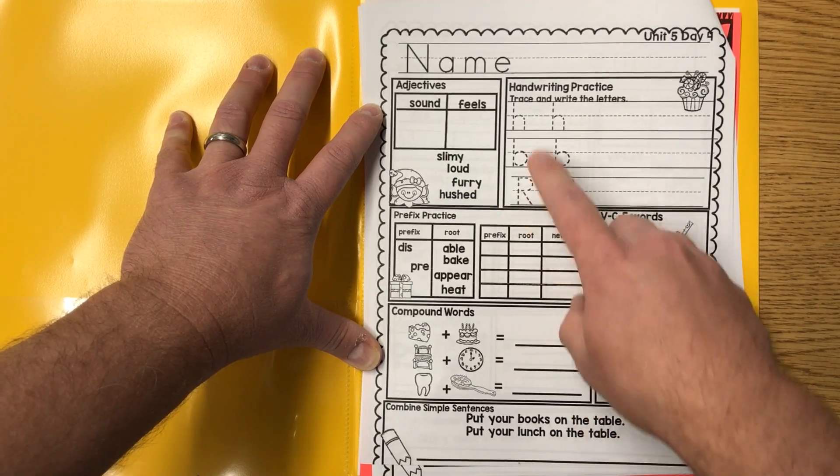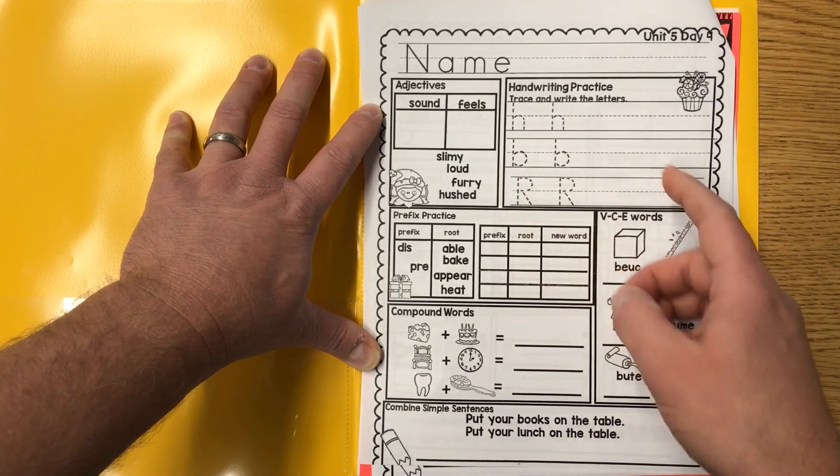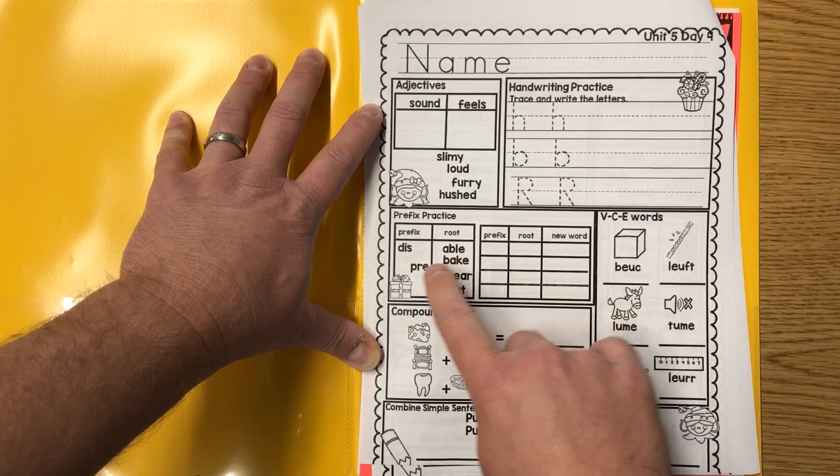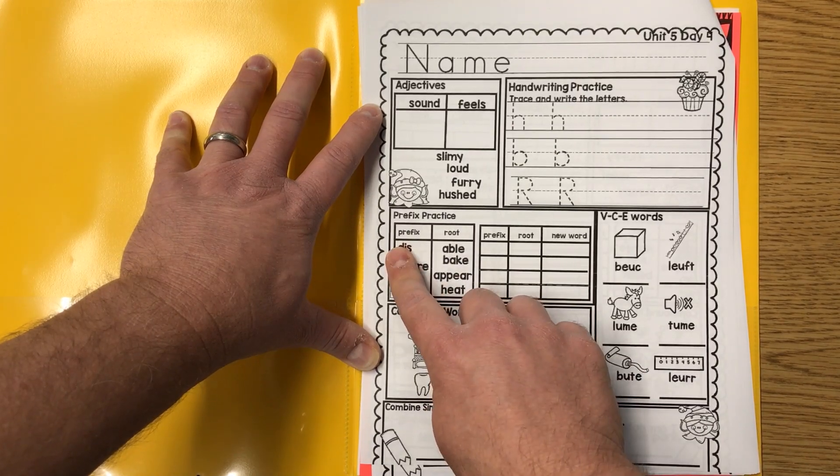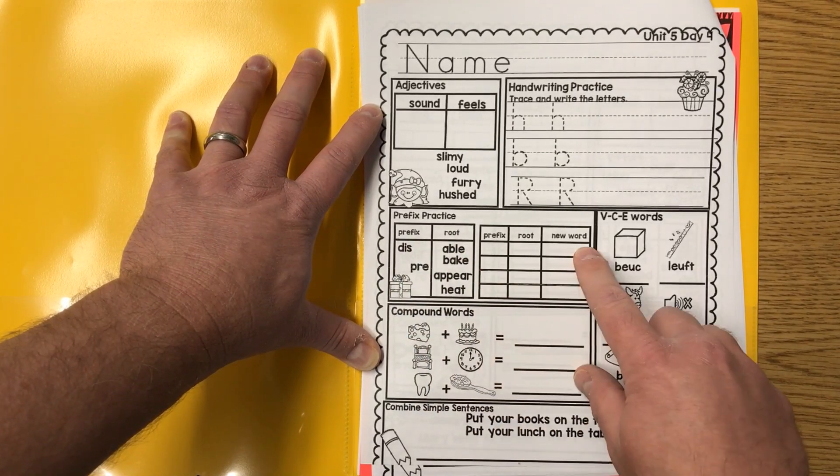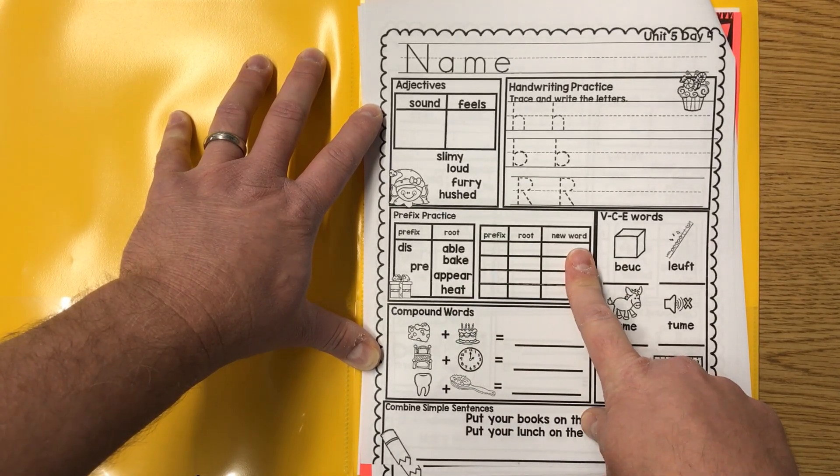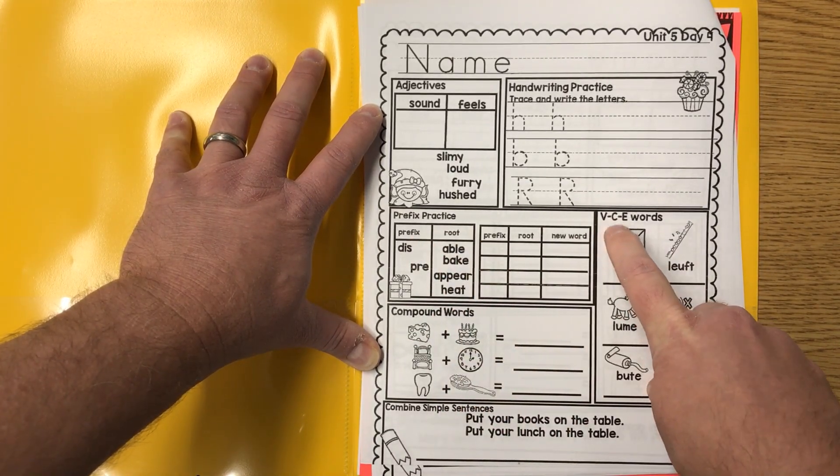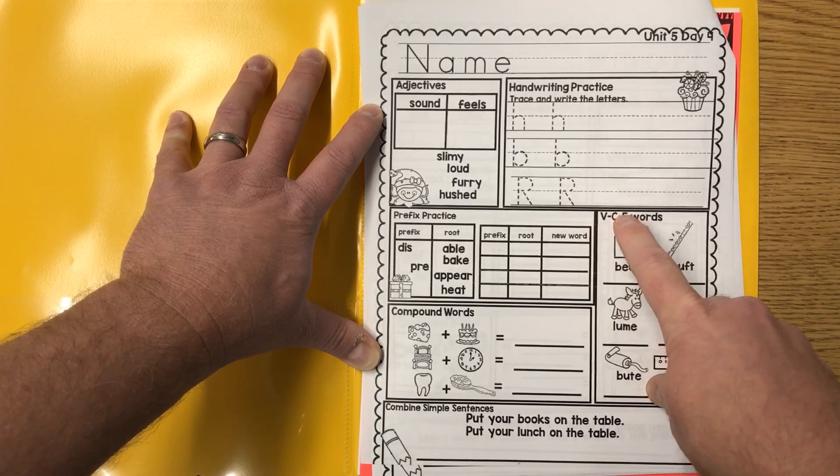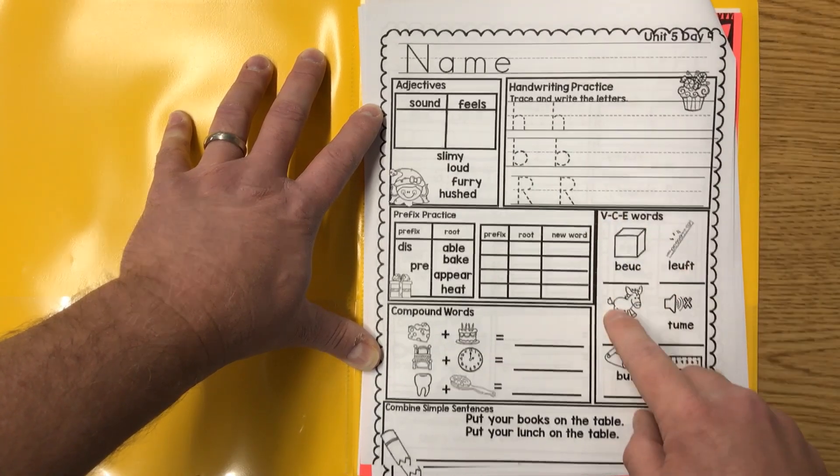My voice is going on me. Prefix practice, we've got dis and pre. We've got words like disable - you could figure those out. You got able, bake up here, and heat. Combine them, make a new word with those prefixes. VCE words, that means vowel consonant E. Rearrange your letters to make the real words.